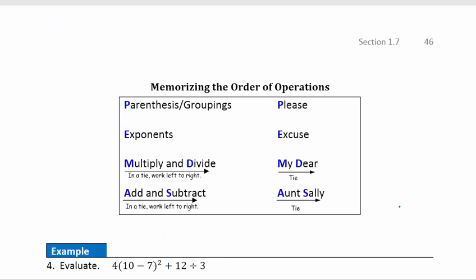Now let's look at the full order of operations. We don't simply go left to right — groupings come first, then exponents, then multiplication and division at the same time. Multiplication and division are a tie, so when both appear we work left to right. Addition and subtraction also tie, so we work left to right for those as well.